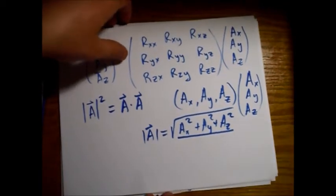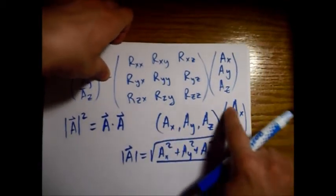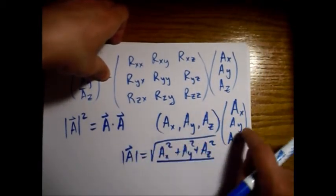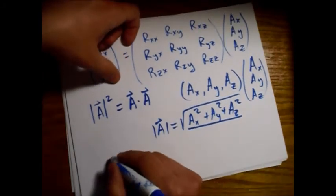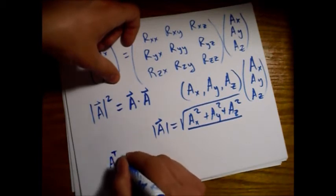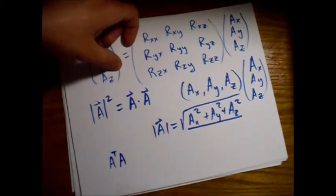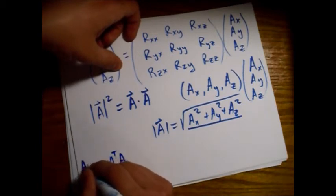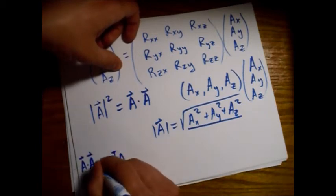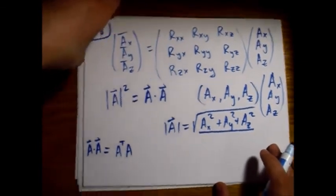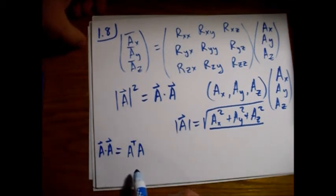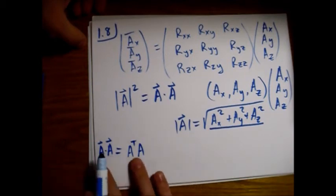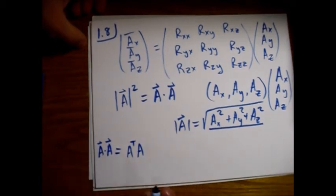we want to know what constraints this matrix has to satisfy in order to preserve this length or the magnitude of A, any A. Alright, so, so what we did here is to get this row vector, we took the transpose of this column vector. So I could sort of write this as A transpose A, like that. I hope I'm not on too shaky ground mathematically writing it that way. So,